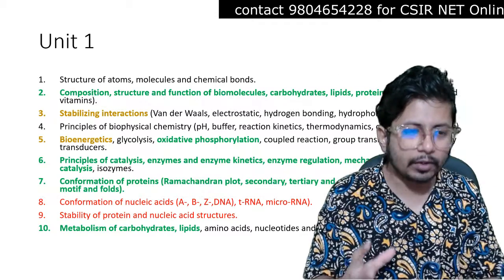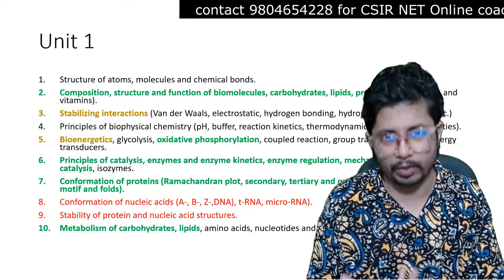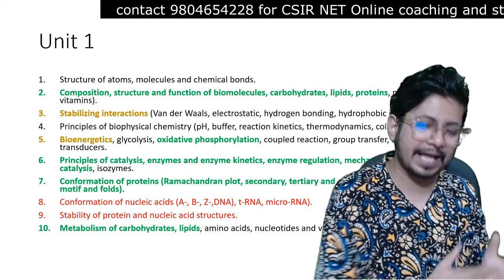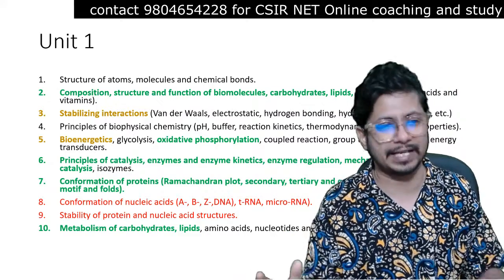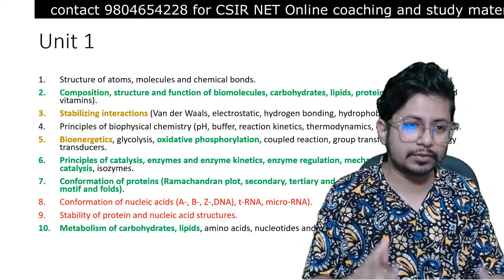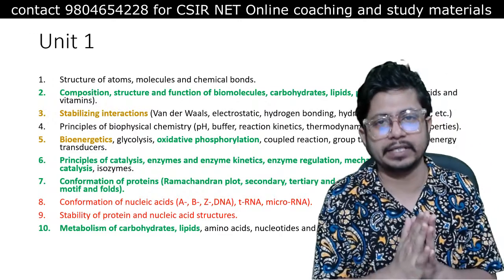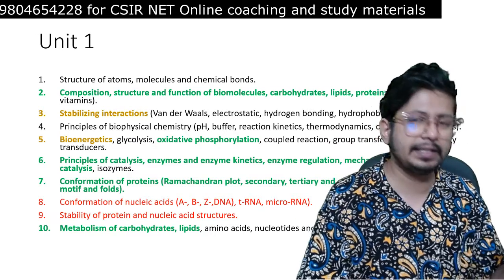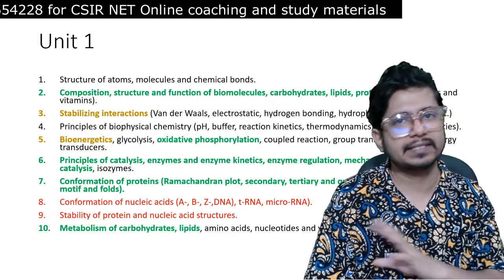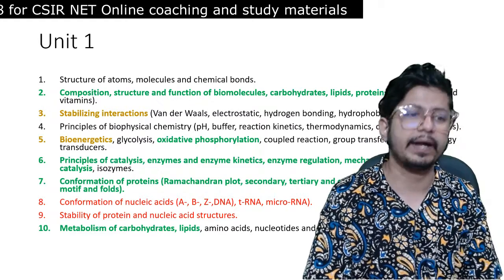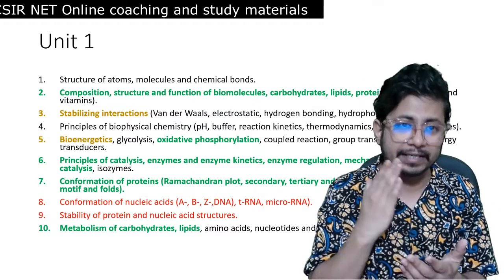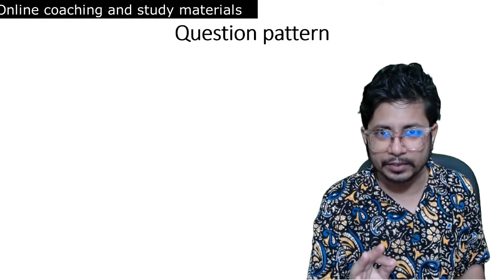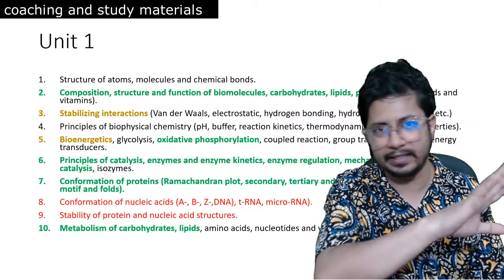Metabolism of vitamins, nucleic acids, and amino acids are not that important. The syllabus is unnecessarily lengthy in Unit 1, so we need to find a way to focus on what's really important. Biochemistry is a whole course in graduation and masters, yet it's only one unit here. The green topics I mentioned carry more importance — and this isn't just my opinion. You can verify this yourself by analyzing the last 10 years of CSIR NET question papers thoroughly.